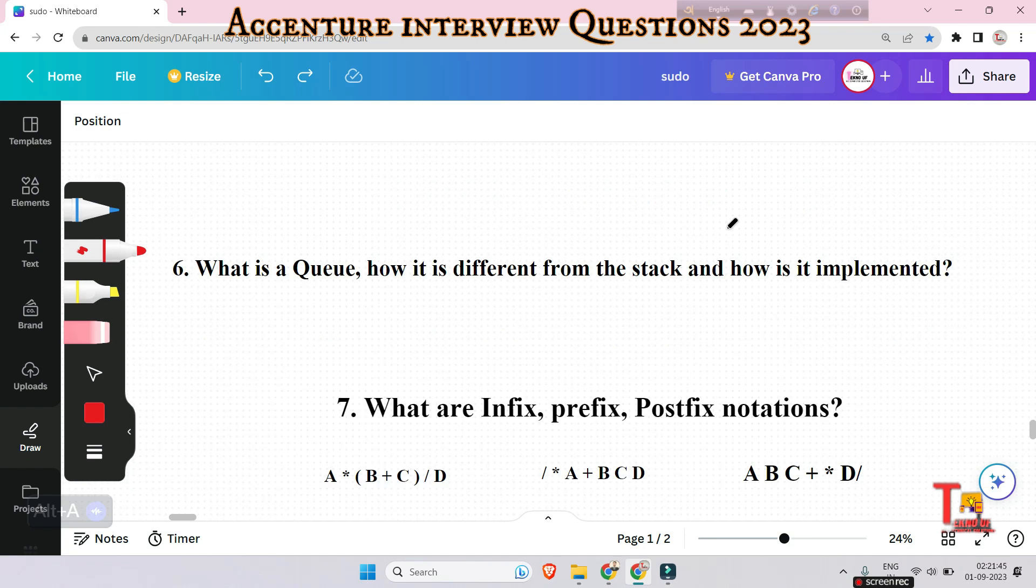What is queue, how it is different from stack, and how is it implemented? This is also a very important question. Before you answer, I would request you to please subscribe this channel to get such latest updates and content. Queue is a linear data structure that follows the order FIFO (First In First Out) to access elements. Main operations like enqueue, dequeue, front, and rear are operated here. The difference is: in a stack we remove the most recently added item; in a queue we remove the least recently added item. Both can be implemented using arrays and linked lists.